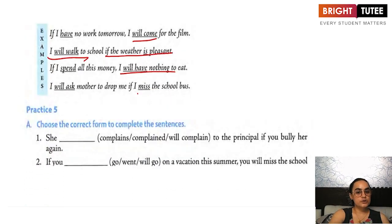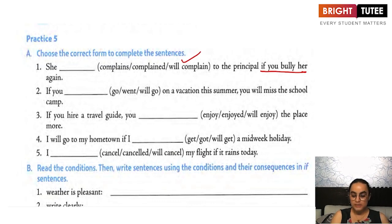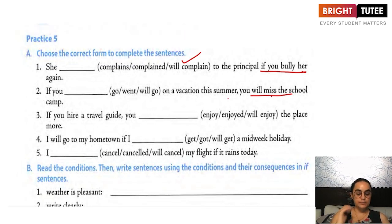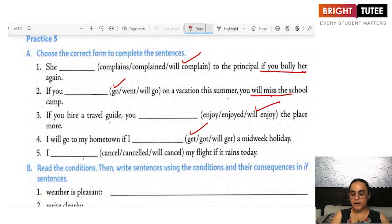Let us solve questions. Choose the correct form to complete the sentences. 'She will complain to the principal if you bully her' — 'if' is followed by the first form, so 'will' form comes in the main clause. 'If you go on a summer vacation this evening, you will miss the school camp.' 'If you hire a travel guide, you will enjoy the place more.' 'I will go to my hometown if I get a mid-week holiday.' 'I will cancel my flight if it rains today.'